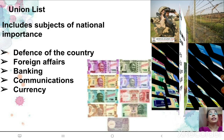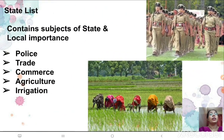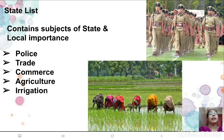The second is the state list. It contains subjects of both state and local importance like police, trade, commerce, agriculture, and irrigation. The state government has the right to make laws on these subjects.